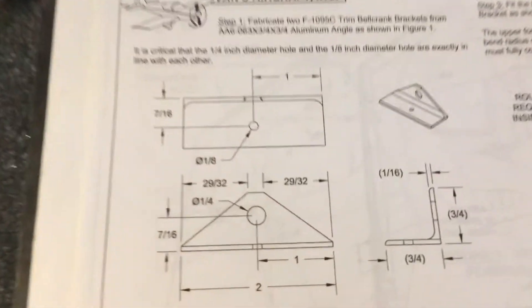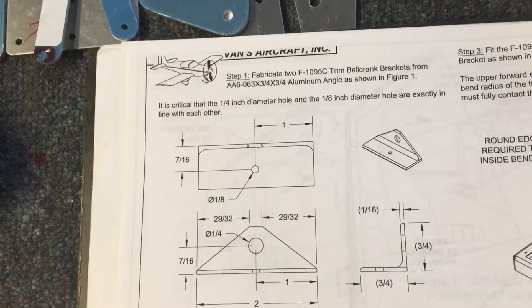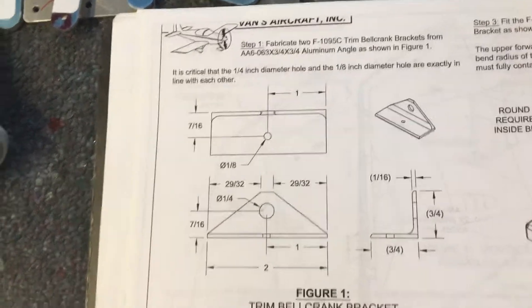It is the F1095 Charlie trim bell crank bracket.